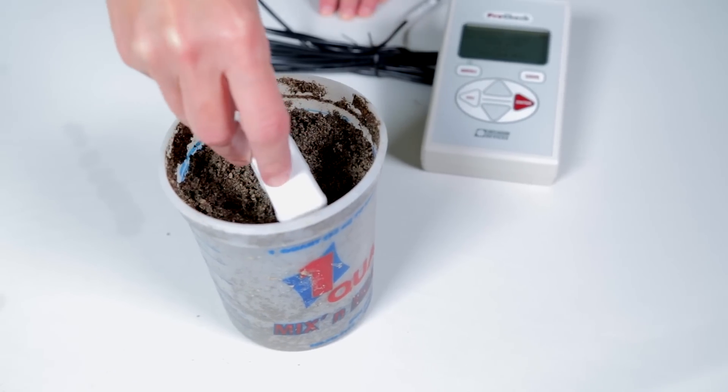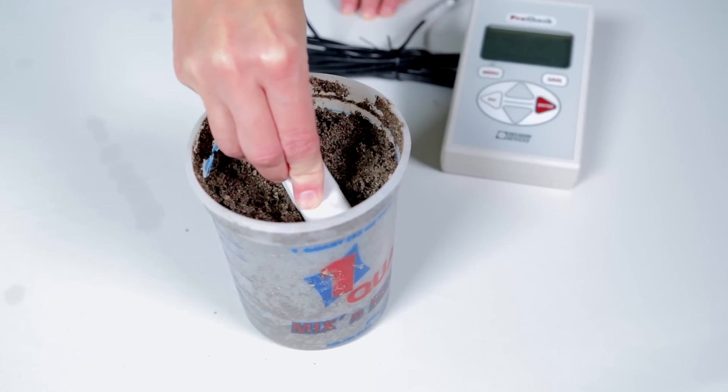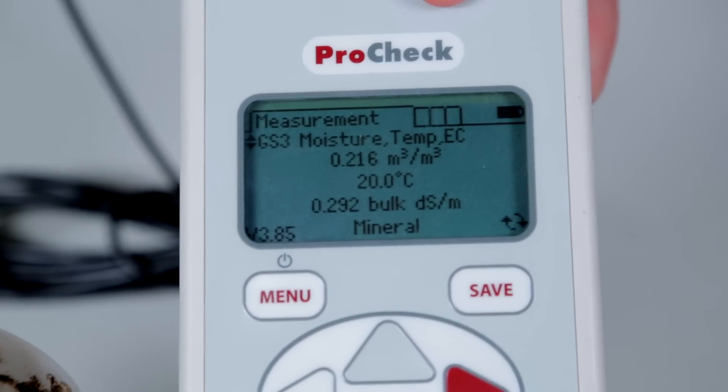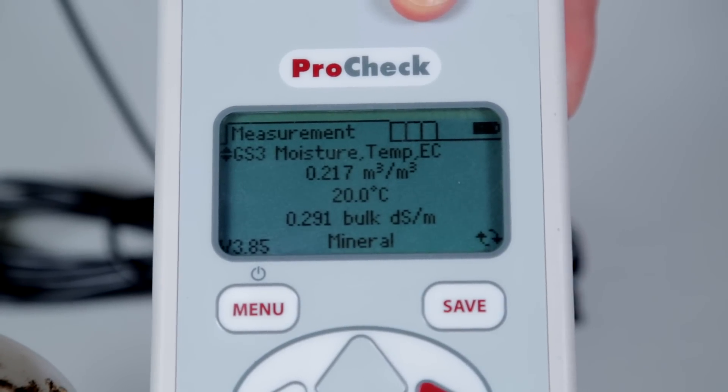Now we'll pour the water onto the soil and allow it to drain out until it's at about field capacity. Now our EC reading is about 0.3 deci-siemens per meter.